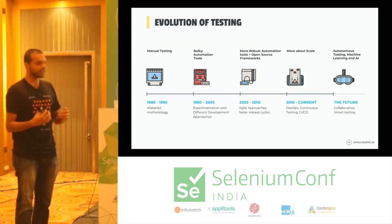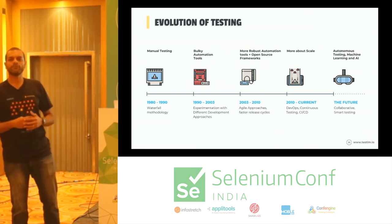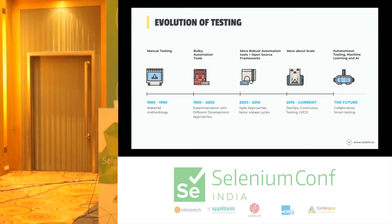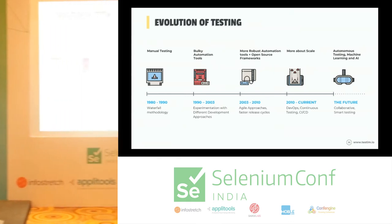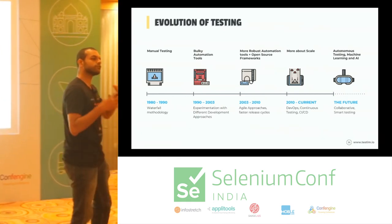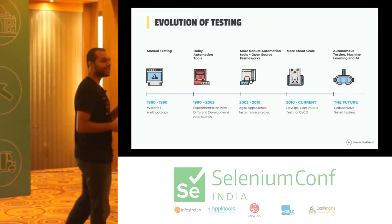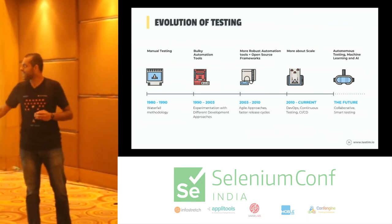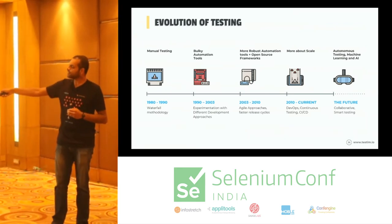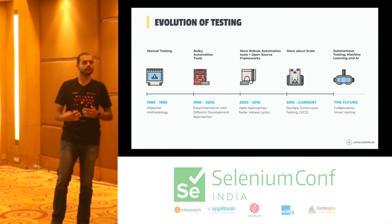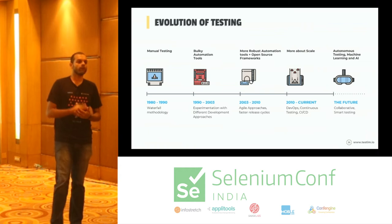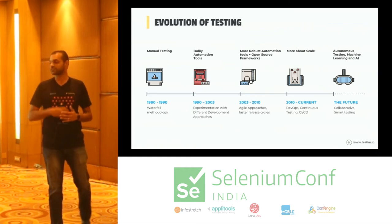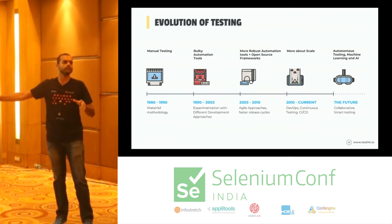From 1990 to 2003, we started seeing bulky automation tools cropping up. Testers were happy to finally have something to help with testing, but these tools were bloated, hard to understand, and had a steep learning curve. At the same time, people started experimenting with different development approaches like RAD — Rapid Application Development — Scrum, and XP.